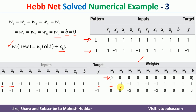Continuing the weight calculations after pattern L: w3(new) = -1, w4(new) = 0 + 1*1 = 1. Following the same Hebb update rule w_i(new) = w_i(old) + x_i*y for all remaining weights w5 through w9 and the bias, we compute all updated weight values after seeing the first training input.